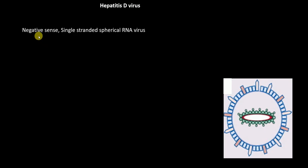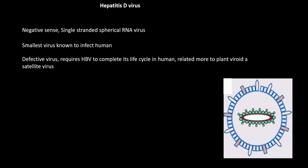Hello everyone. In this lecture, I'm going to talk about Hepatitis D virus. Hepatitis D virus is a negative-sense, single-stranded, spherical RNA virus. As you can see in the picture, it has a spherical structure. This virus is the smallest virus known to infect humans, and it is called a defective or satellite virus because it requires Hepatitis B virus to complete its life cycle. This virus has also been found to be more related to plant viruses.